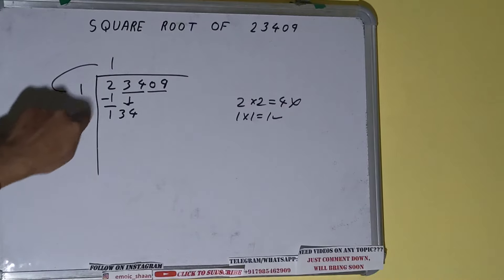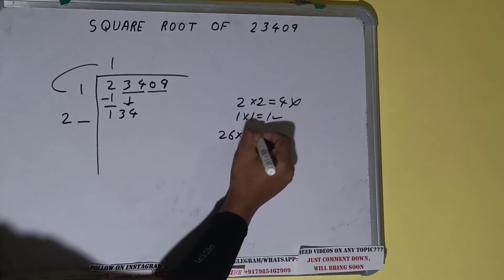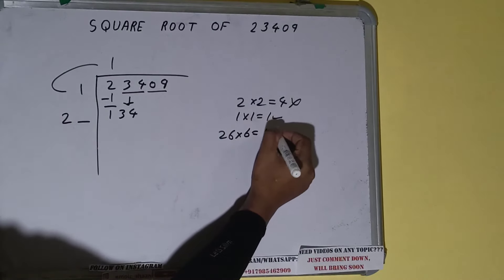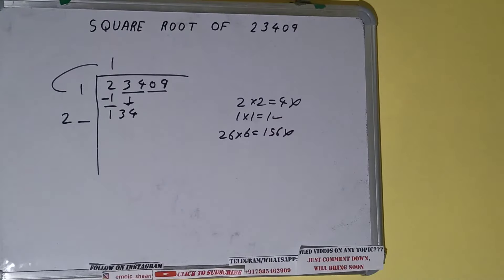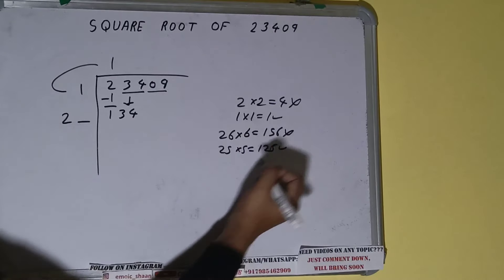Now whatever number we write here, we have to write here also. So we can try six times: 26 into six, it will be 156 which is greater than 134, so we cannot use it. Let's try five times: 25 into five will be 125 which is good to use.